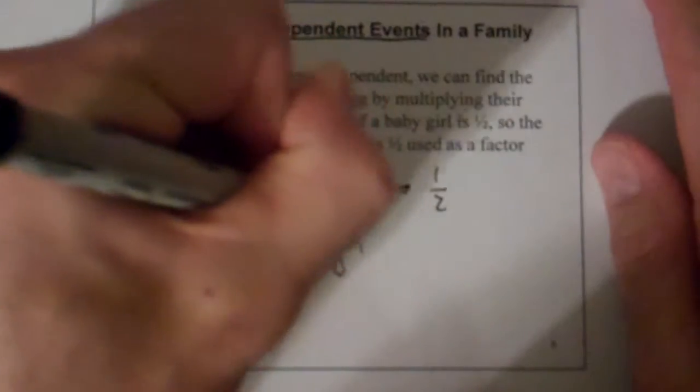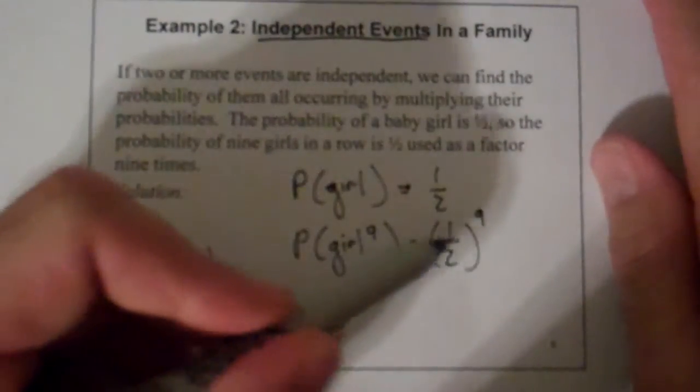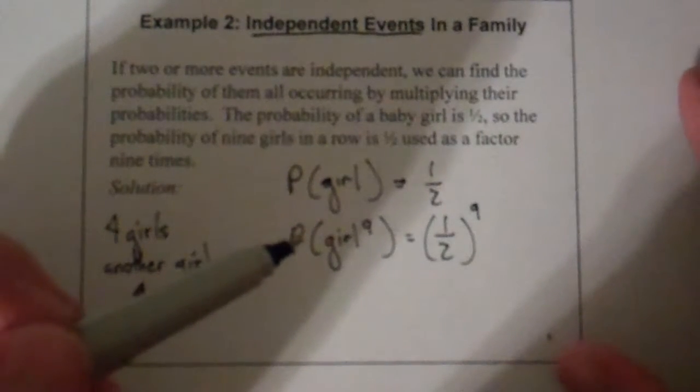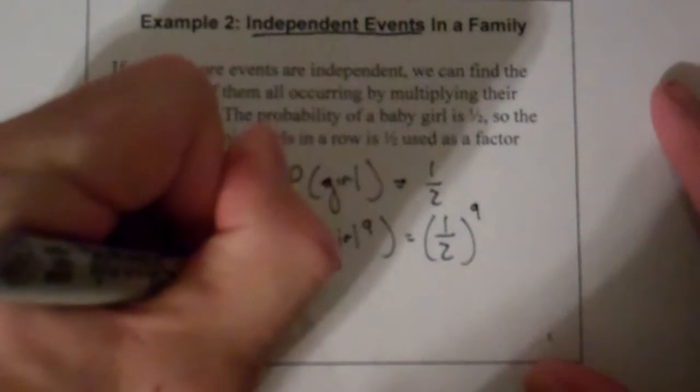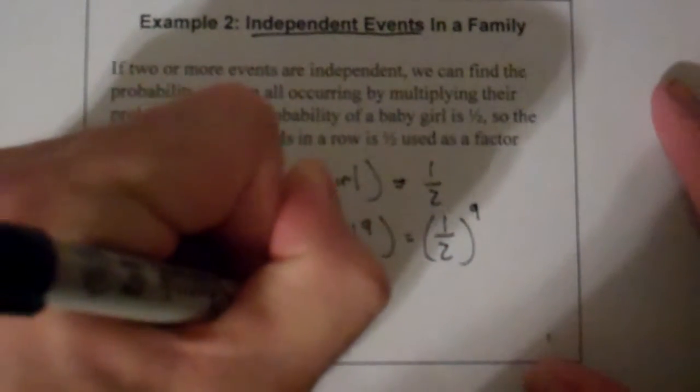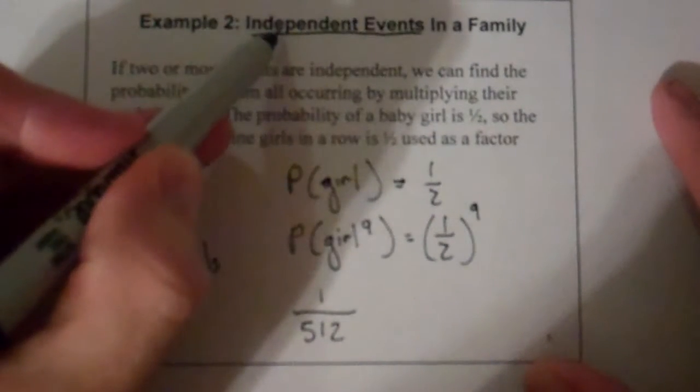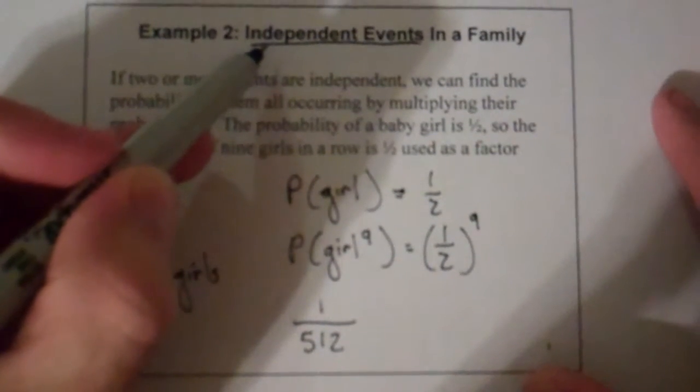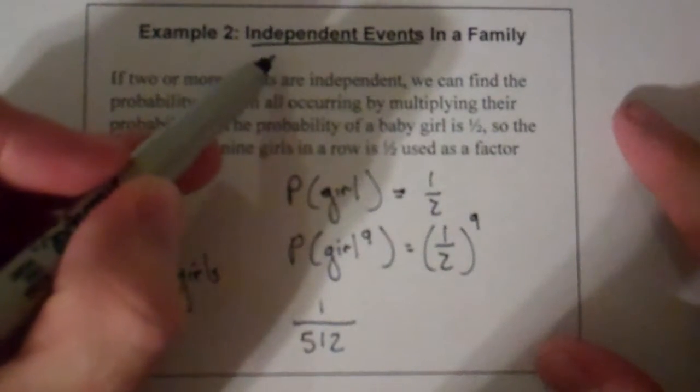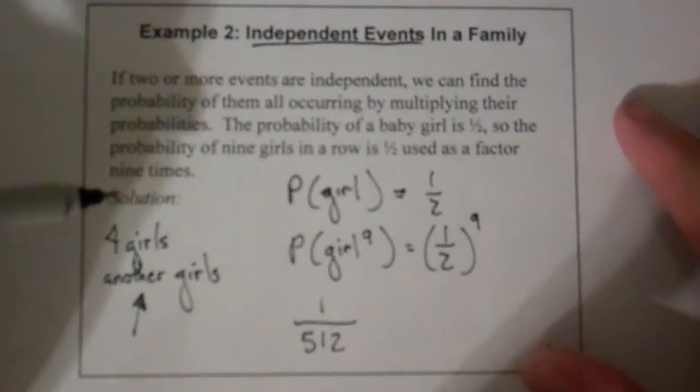The probability of a girl is equal to one half. So the probability of a girl nine times — I can actually use the ninth power for that — means that I'm going to have one half raised to the ninth power. Don't forget the parentheses, otherwise something very weird could happen. This means we're going to get a probability of about one in five hundred and twelve. This is assuming independent events, but the mom's body does remember what happened last time and is more likely to do that again.